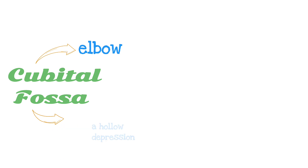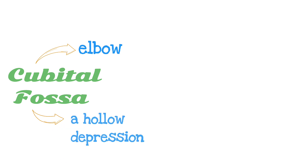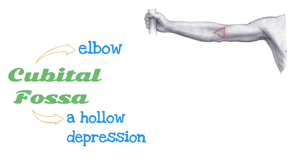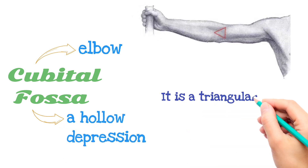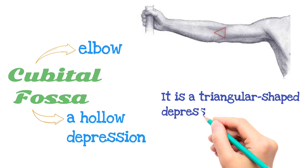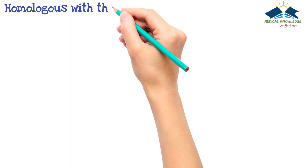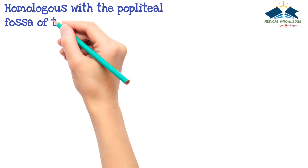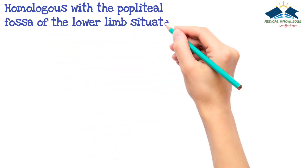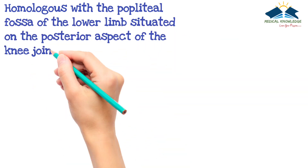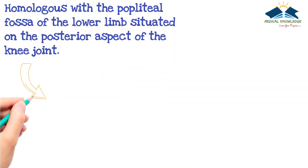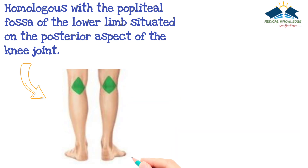Cubital means elbow and fossa means a hollow depression. Cubital fossa is defined as a triangular shaped depression over the anterior aspect of the elbow joint. It is homologous with the popliteal fossa of the lower limb, situated on the posterior aspect of the knee joint.